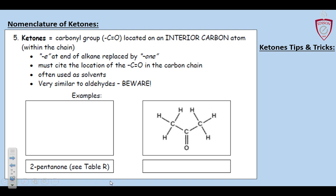Now we've got ketones. Ketones are a lot like aldehydes, but the C double bonded O — the carbonyl group — is in the middle of the chain, not the end. That makes it a ketone. Acetone, ending in '-one,' is a ketone — really useful for getting nail polish off, and it sanitizes really well. We're going to name it the same way, but they have '-one' at the end — you lose the '-ane.'